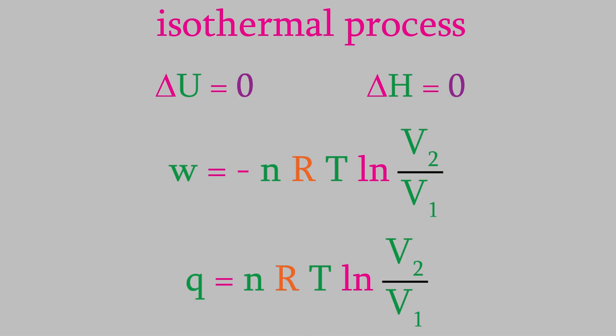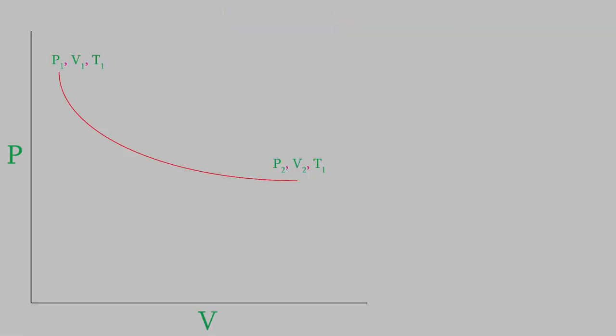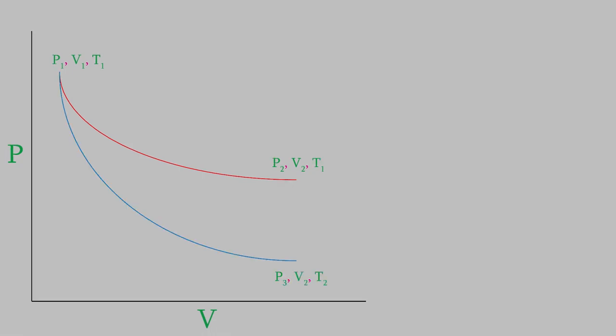Now we have expressions for all four thermodynamic properties for the isothermal case. What if we hold something other than temperature constant? Let's go back to the plot and change the system using a two-step process. First, we'll change all three basic properties — pressure, volume, and temperature — in step one, making the final volume the same as in the first example. In this case, we'll hold the heat constant by performing the process in a well-insulated container so that no heat is exchanged with the surroundings. Just as a constant temperature process is called isothermal, a constant heat process is called an adiabatic process.